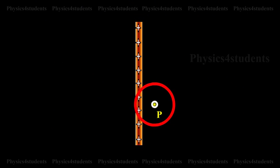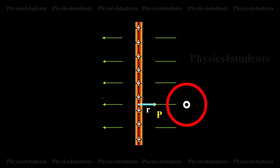Let P be a point at a distance R from the wire and E be the electric field at point P.